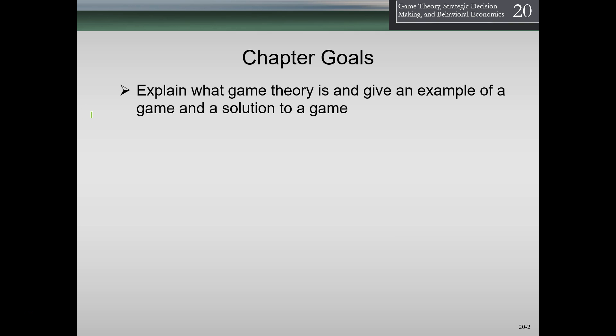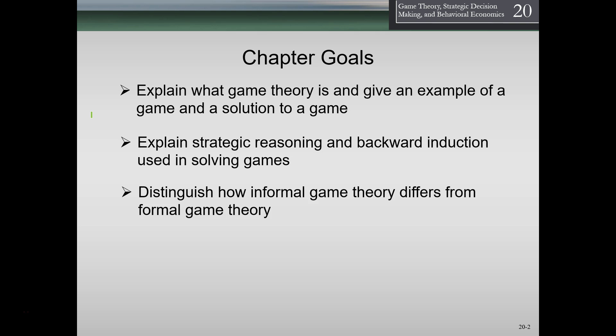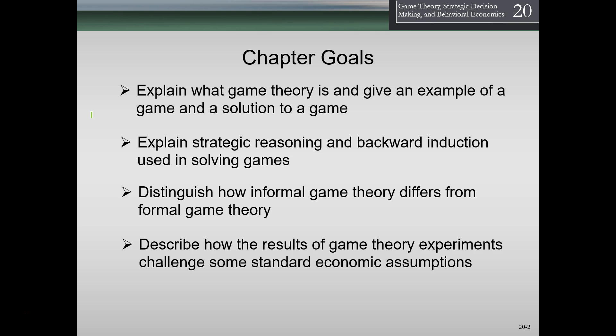Chapter goals: First, explain what game theory is and give an example of a game and a solution to a game. Explain strategic reasoning and backward induction used in solving games. Distinguish how informal game theory differs from formal game theory, and describe how the results of game theory experiments challenge some standard economic assumptions.